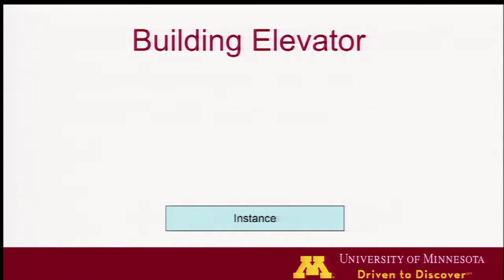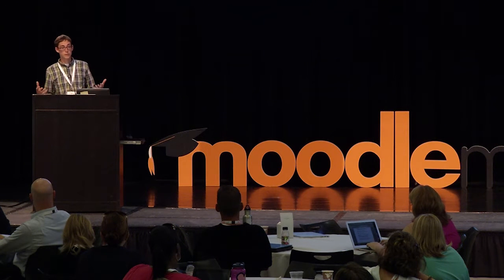I want to talk a little bit about how Elevator works without getting into the techie side of things. The very first thing in Elevator is something called an instance — that's like a domain, a website, so elevator.umn.edu or whatever. That takes you to a custom website with its own design, look and feel, and a collection of content that might be art history content or school of music content. Next, we have metadata templates — each instance has whatever templates make sense for their objects, so the school of music has a very different schema from, for example, the medical school.